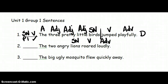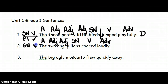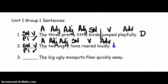What kind of lions? Angry. Adjective. How many lions? Two. Adjective. The. Article. Adjective. Subject noun. Verb. Pattern 1. Check. Period. Statement. Declarative sentence.